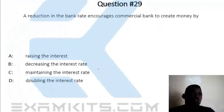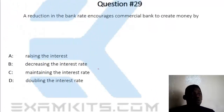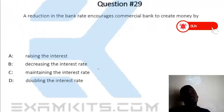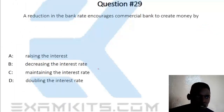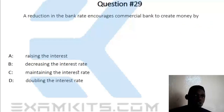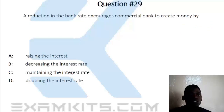Question 29. The reduction in the bank rate encourages commercial banks to create money. Options: A — raising the interest rate; B — decreasing the interest rate; C — maintaining the interest rate; D — doubling the interest rates. The answer is C, maintaining the interest rate.